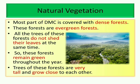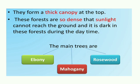The trees are very tall and grow very close to each other, as seen in the picture. They form a thick canopy at the top. These forests are so dense that sunlight cannot reach the ground, making the forest floor dark even during the daytime, because of the tall trees with thick canopies growing close together.